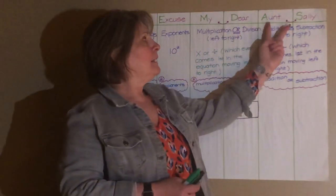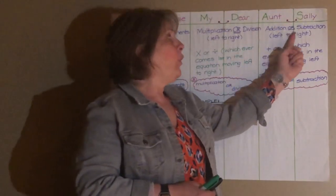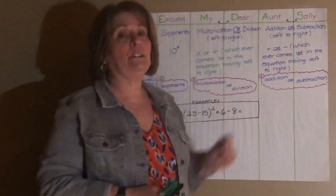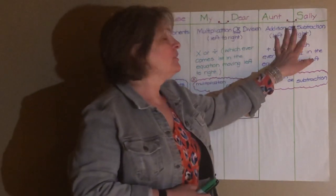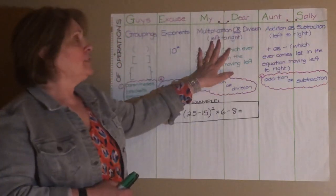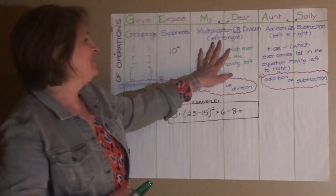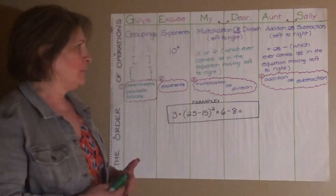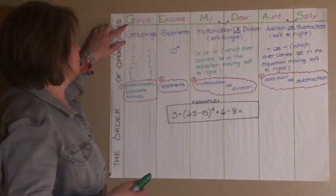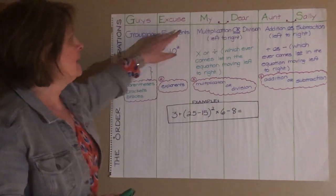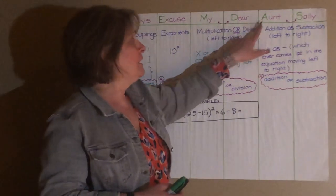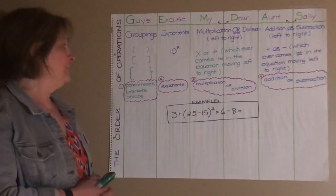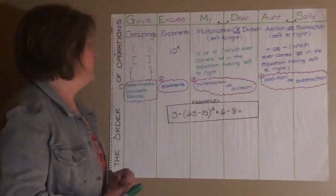And then the same with Aunt Sally stands for addition or subtraction. And again, whichever comes first in the equation, moving left to right, we do that first. But addition and subtraction always come after multiplication and division unless the addition and subtraction are in parentheses, brackets or braces. So if we look at this again, G stands for grouping, E stands for exponents, M and D stands for multiplication or division, A and S stand for addition and or subtraction. So these are the most important things that we can remember.